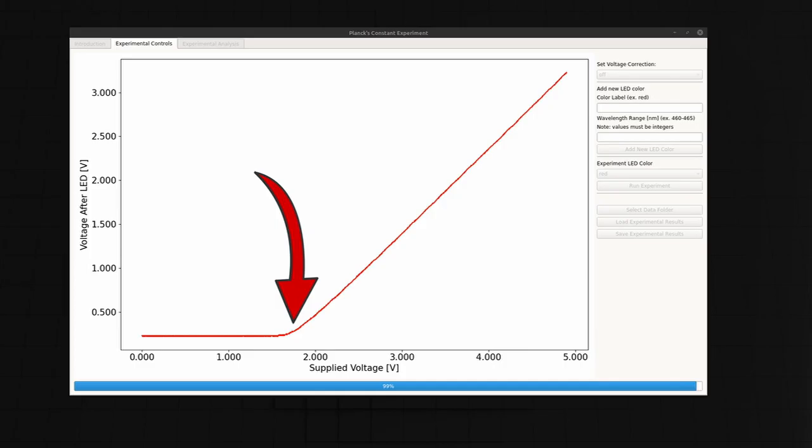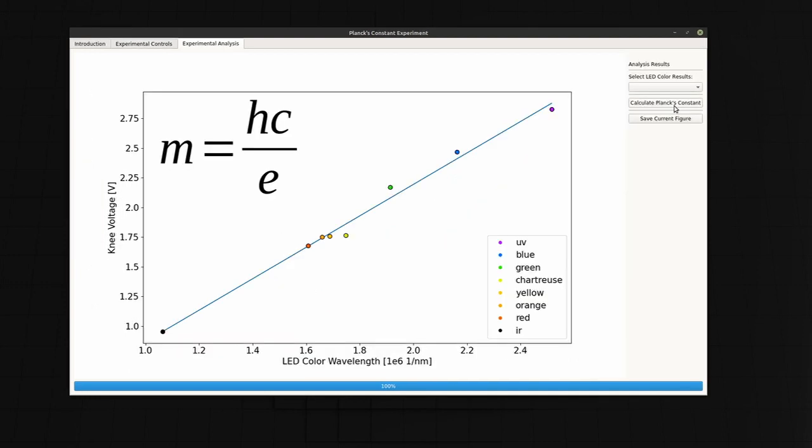If we collect the data about the knee voltage for several LEDs of different colors, and then plot this as a function of 1 over lambda, we obtain a line of best fit with a slope m, which is equal to hc over e. Or if we do a bit of algebra again, we get Planck's constant, m times c over e.